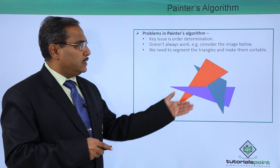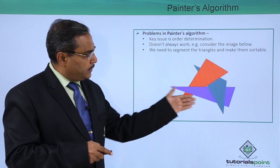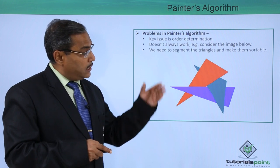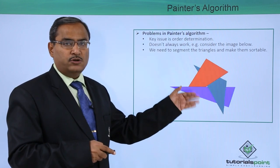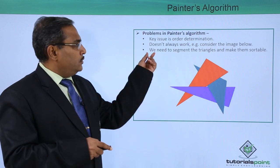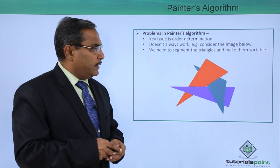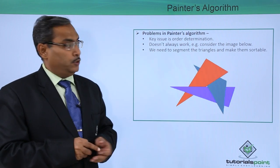Does not always work, consider this image below. Here you see it is very difficult to judge which polygon or which triangle is over whom. We need to segment the triangles and make them sortable.